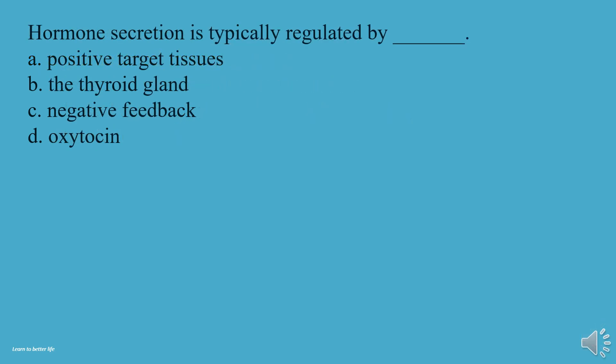Hormone secretion is typically regulated by what? A, Positive target tissues. B, The thyroid gland. C, Negative feedback. D, Oxytocin. The answer is C, Negative feedback.